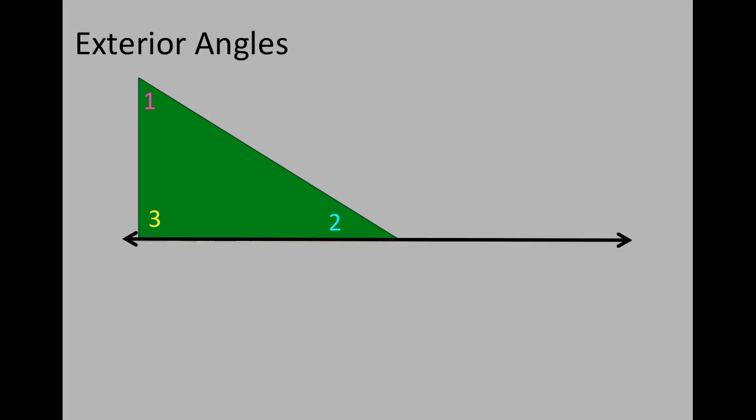I'm going to draw a line along the bottom of this triangle again. And you're going to notice that an angle is formed. I'm going to call it angle 4. Angle 4 is an exterior angle.